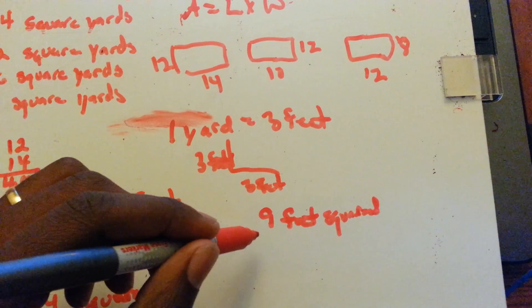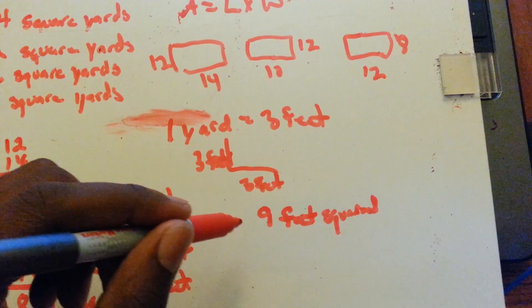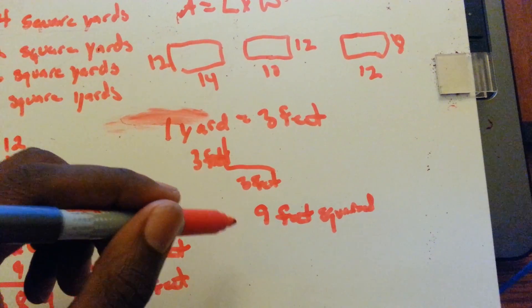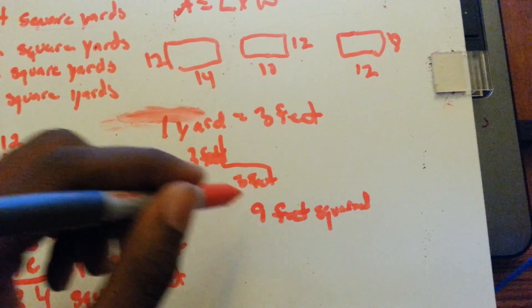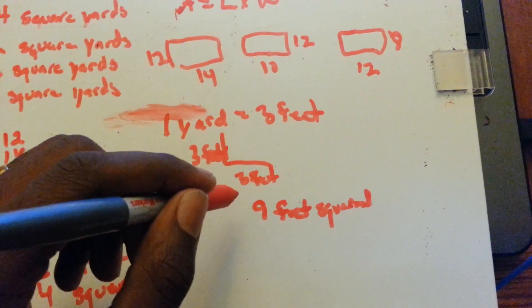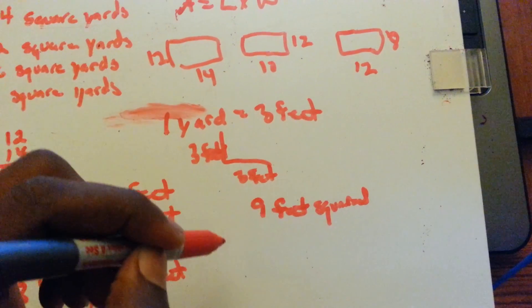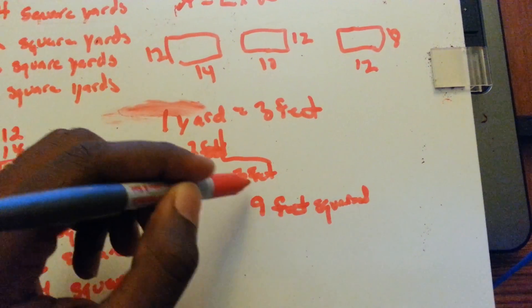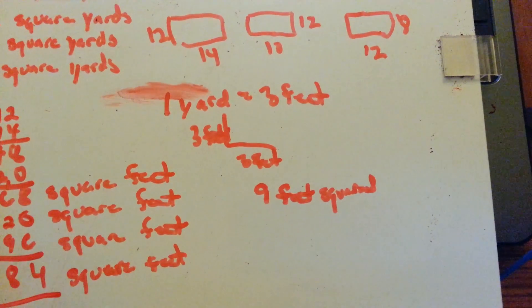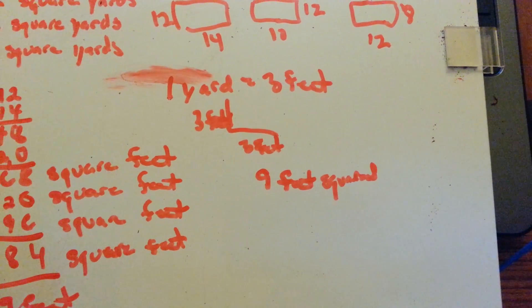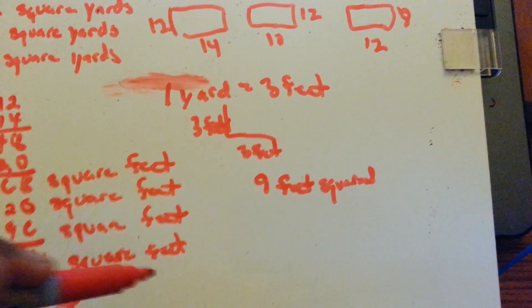Basically, one square yard equals nine feet squared. So, whatever our feet squared is, we have to divide that by nine to get square yards. We have 384. 384 divided by nine.